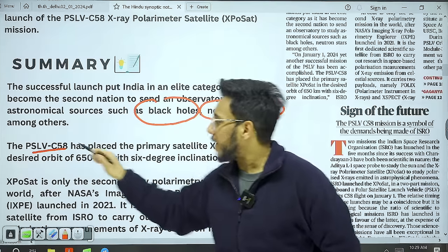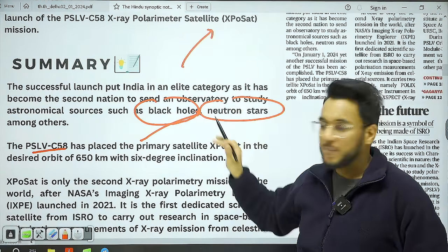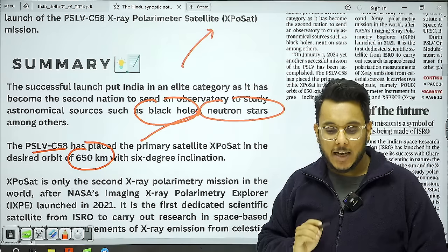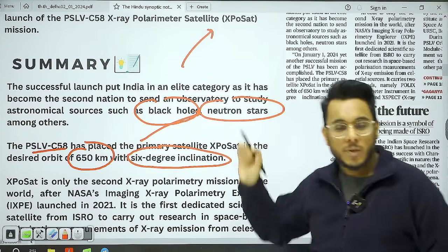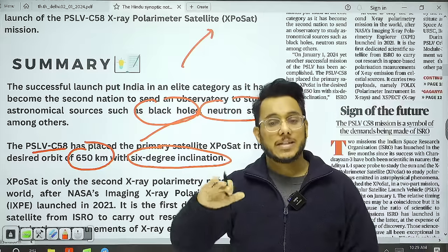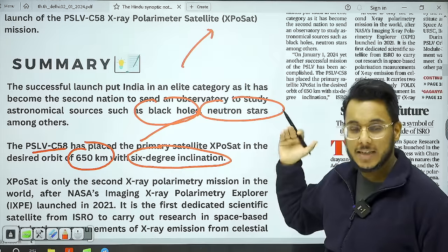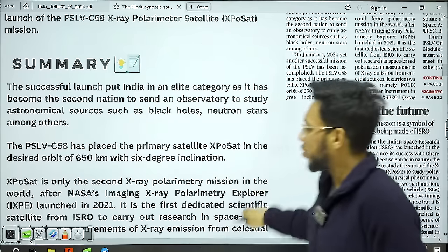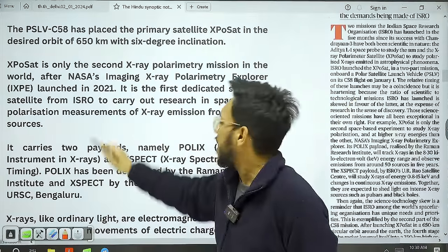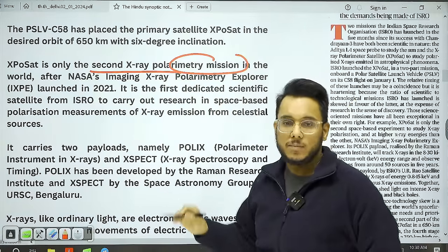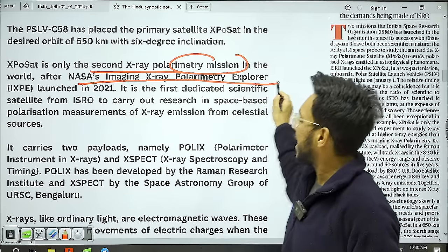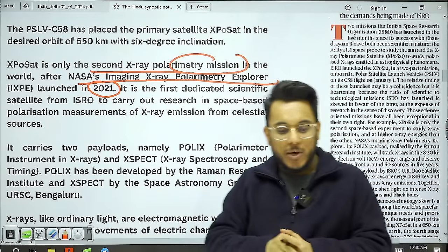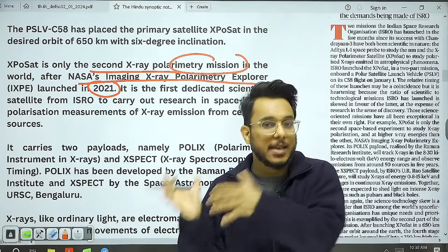The PSLV-C58 will place the ExpoSat satellite in low Earth orbit at a height of 650 km with an inclination of 6 degrees. This mission is very important because India has joined an elite group — only NASA had launched an X-ray polarimetry satellite earlier. ExpoSat is the second X-ray polarimetry mission in the world. The first was NASA's Imaging X-Ray Polarimetry Explorer, launched in 2021. ISRO is taking breathtaking leaps — earlier Chandrayaan-3 was launched to the polar side of the Moon.